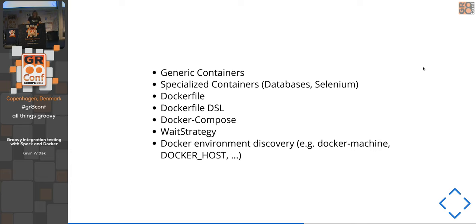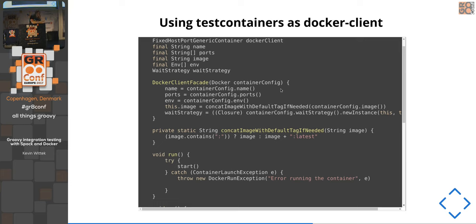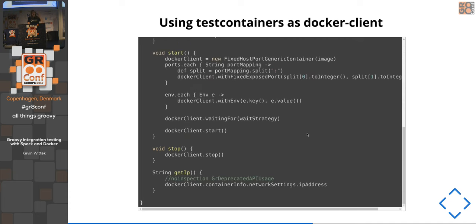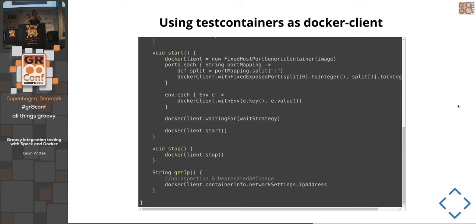TestContainers has additional support for Docker environment discovery — it works with Docker Machine, Docker for Windows, and Docker for Mac; it just uses a configured Docker environment, meaning you could in theory even have the Docker engine running on another host. In the first step of integration, we substituted only the Docker library with TestContainers while still keeping the annotation approach. It's a bit more code but already has more features like environment variables and wait strategies.